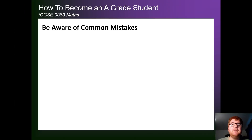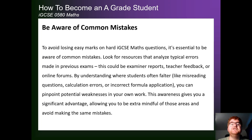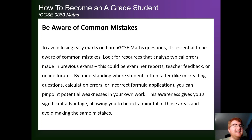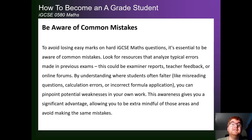Number two is being aware of common mistakes — in particular, analyzing those typical errors made in previous exams. The examiner's report is really, really useful for this, and I've gone through the typical mistakes that IGCSE students make in the video above. Key things to be aware of: misreading questions, even missing out an entire page of questions, which happens occasionally. Making sure that we're calculating correctly, using the calculator, and double-checking those calculations. This will give you a significant advantage over many students because you have that attention to detail that the B grade or C grade student often lacks.